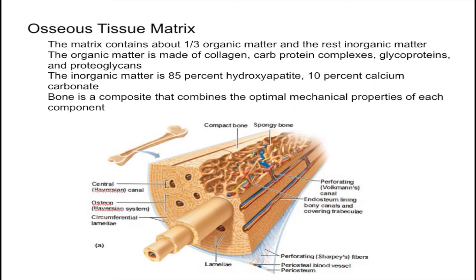One interesting thing about bone is that it's a composite, meaning it's made of two basic structural elements. By combining these, bone combines the optimal mechanical properties of each — the collagen combined with the crystallized calcium phosphate. As a result, one portion provides strength so the bone can support your body mass, while the other portion allows the bone a little bit of flexibility so it doesn't break as easily.